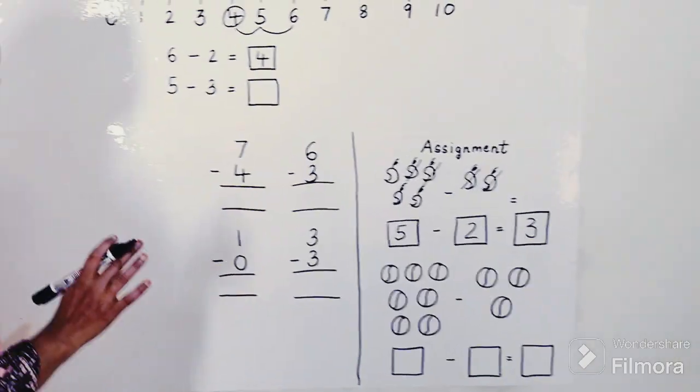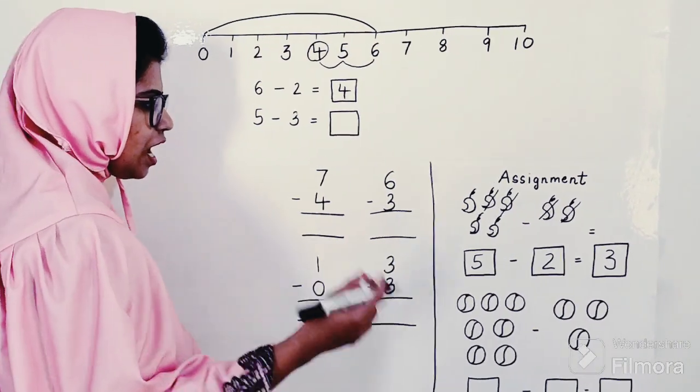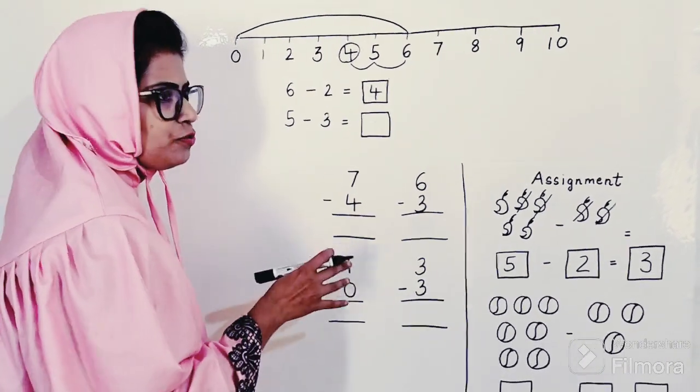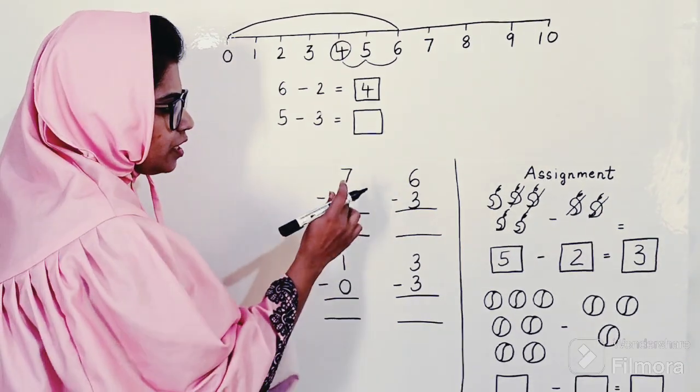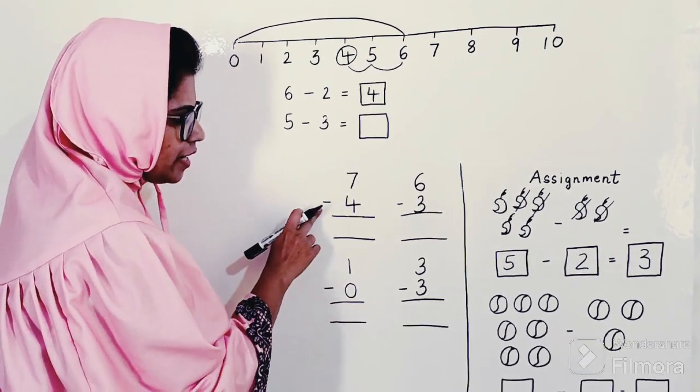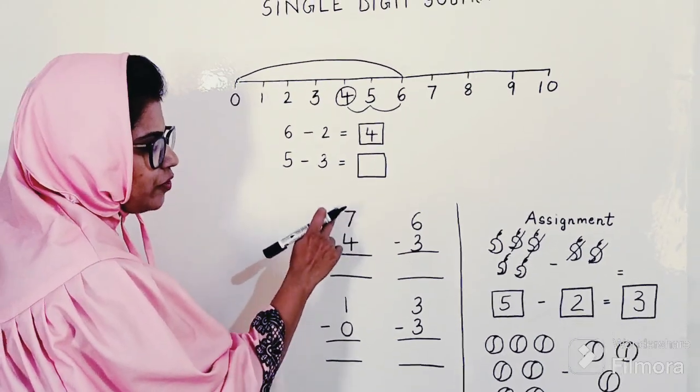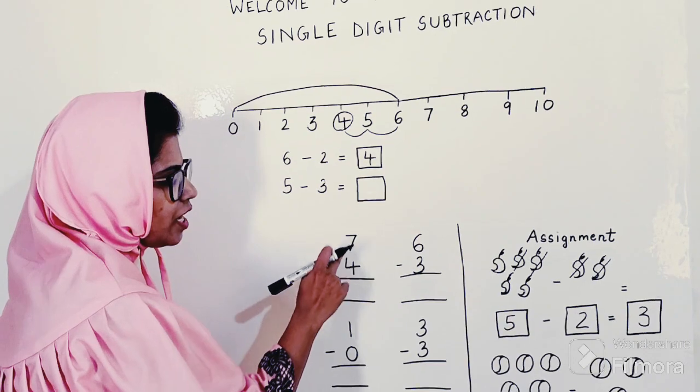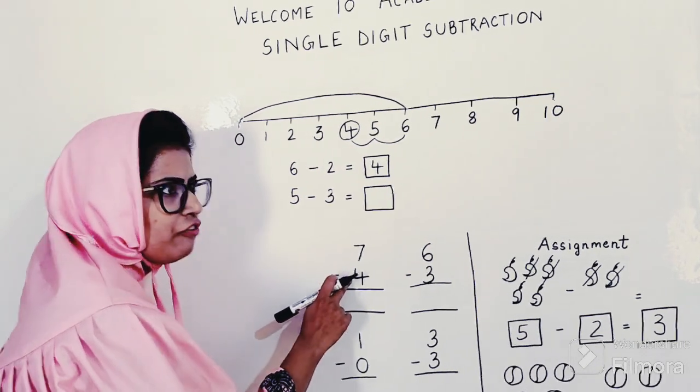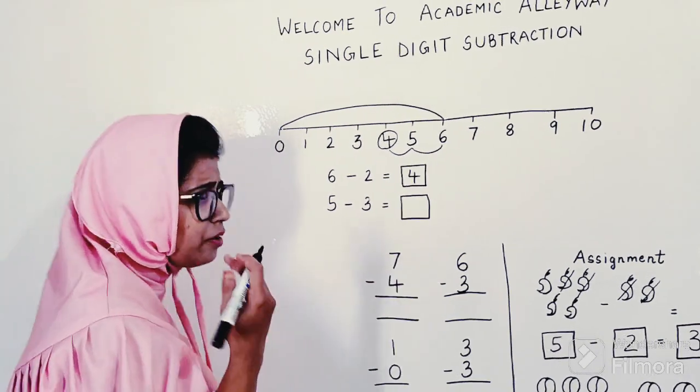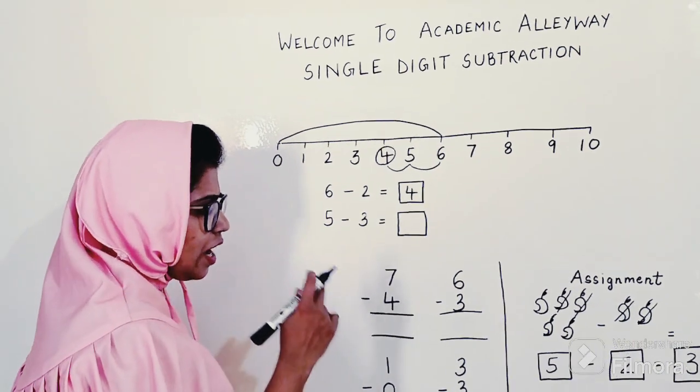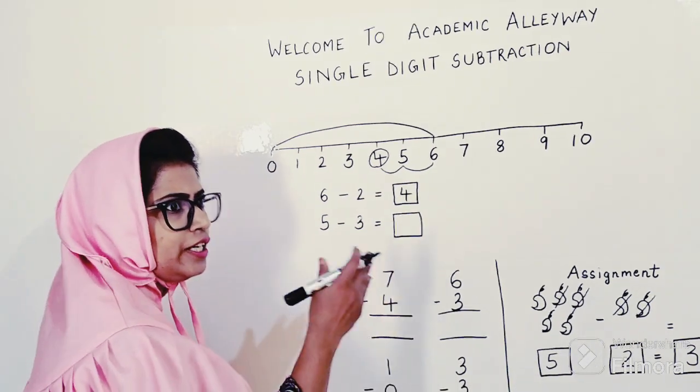Now let's go towards the main method of subtraction: how to actually do subtraction which is useful in the long run. My sum over here is 7 minus 4. So basically, 4 is to be subtracted from number 7. How will you proceed? Keep number 4 in your mind.